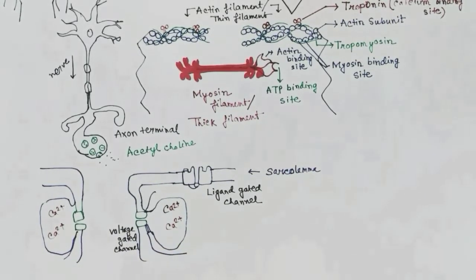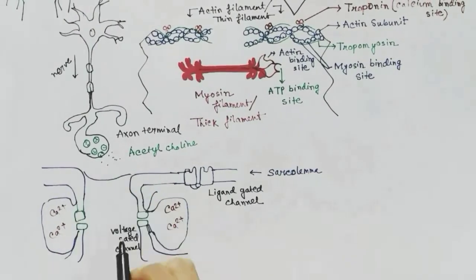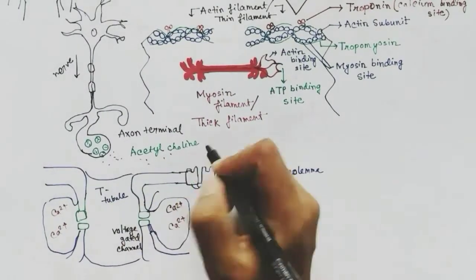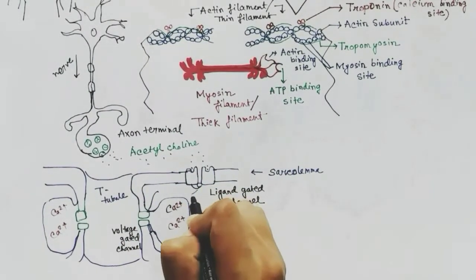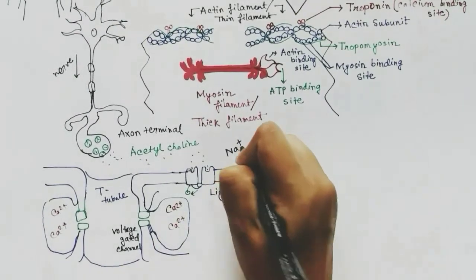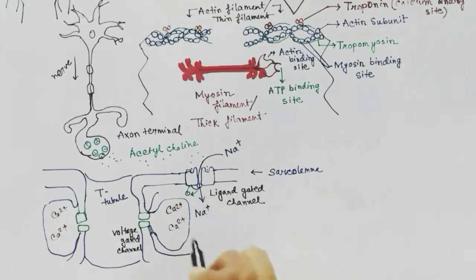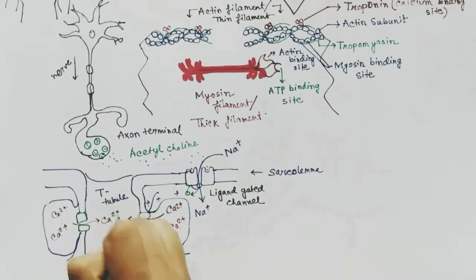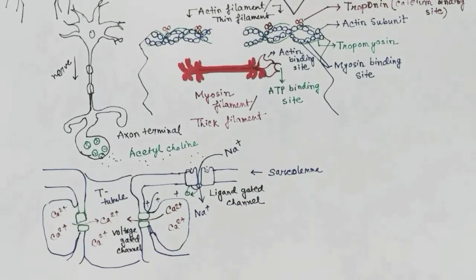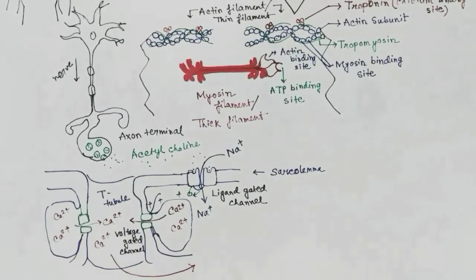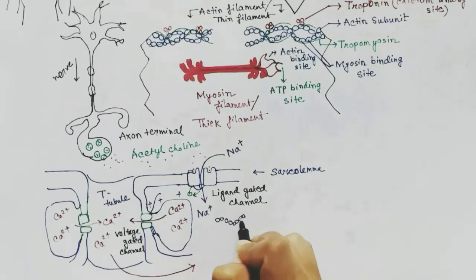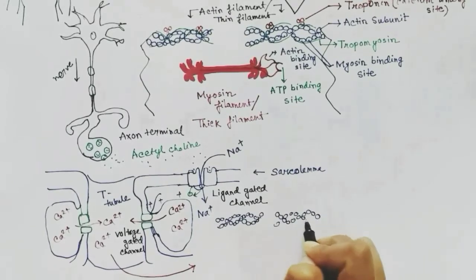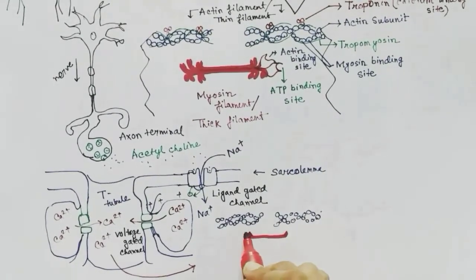The calcium gates are voltage-gated channels — they open when the voltage changes. When acetylcholine connects to the ligand-gated channel, it opens and positive sodium ions flow inside, changing the voltage. This causes the voltage-gated channel to open, and calcium comes out, traveling through the T-tubules to reach the thin and thick filaments surrounded by the sarcoplasmic reticulum.